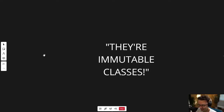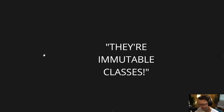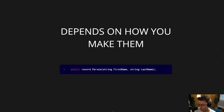Why is it that everybody who's into records is really into records? What most people will claim is that records are immutable classes, and the reason that we use them is because of immutability. And that is absolutely true. But once we start digging deeper, we expose all types of secrets — and that secret is that it depends on how you make records.